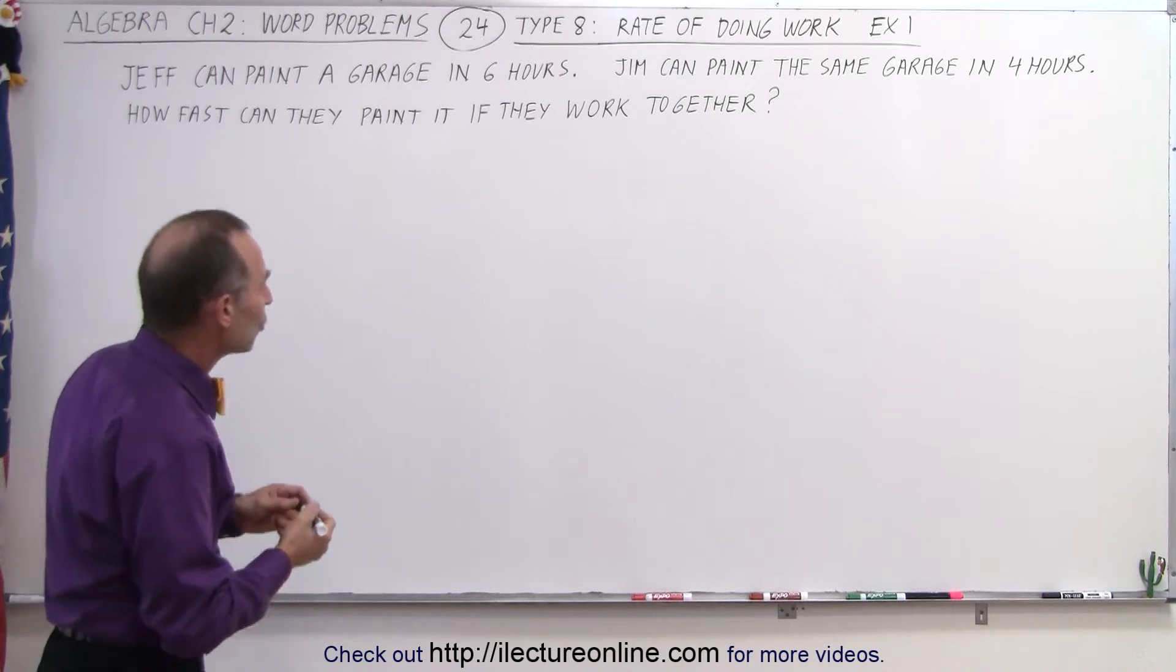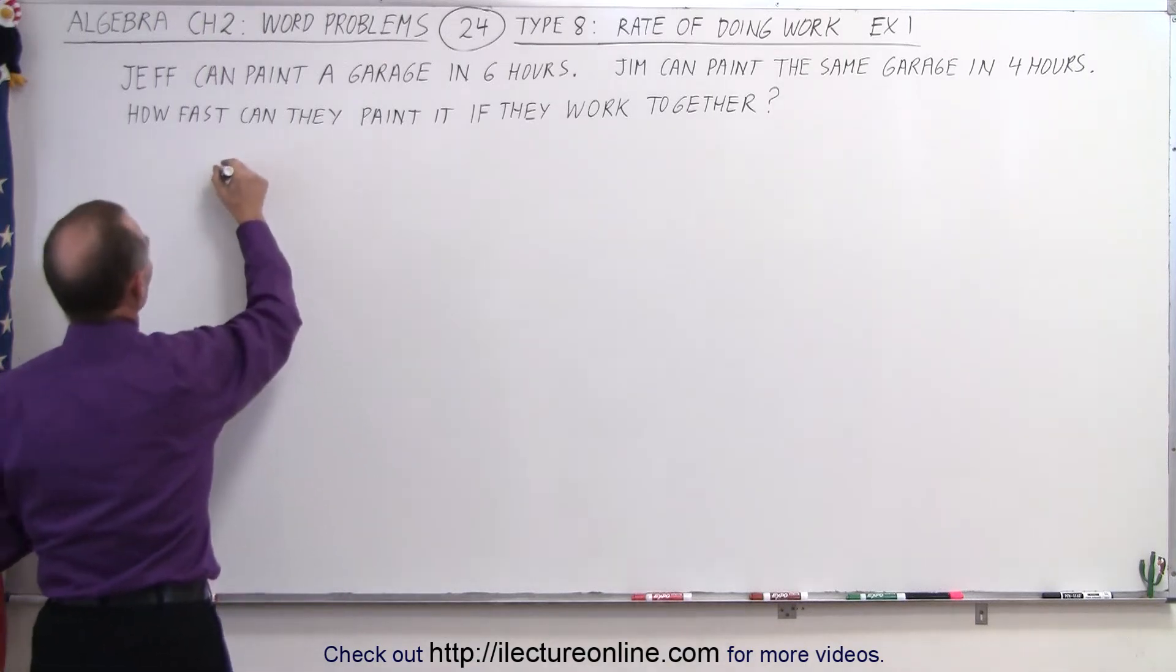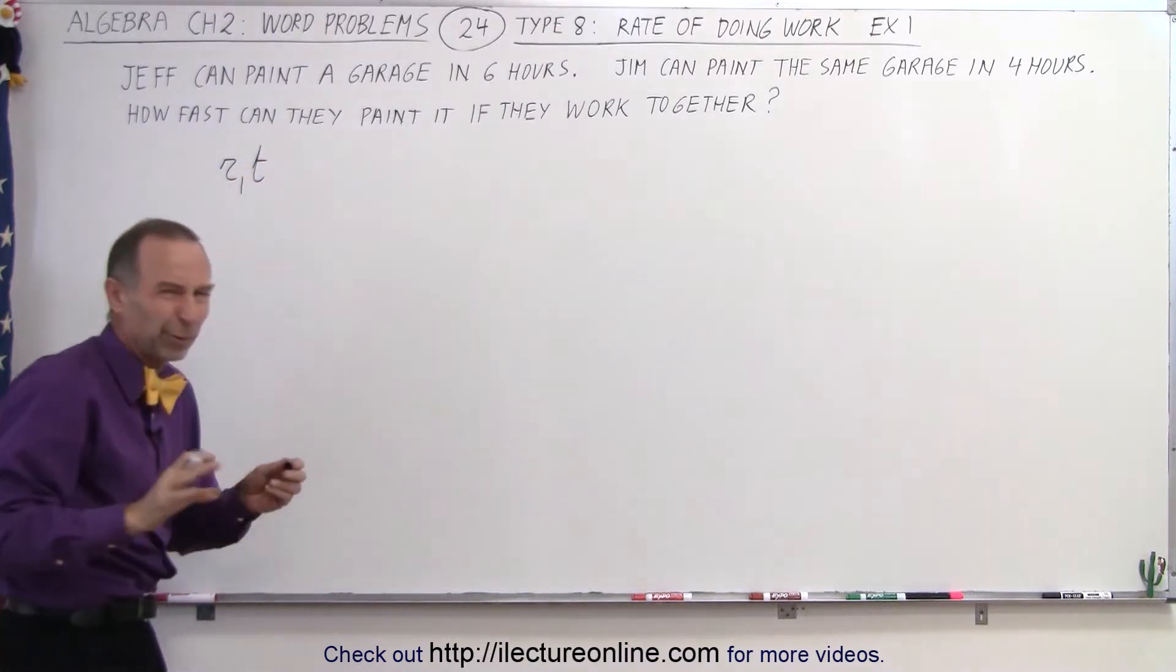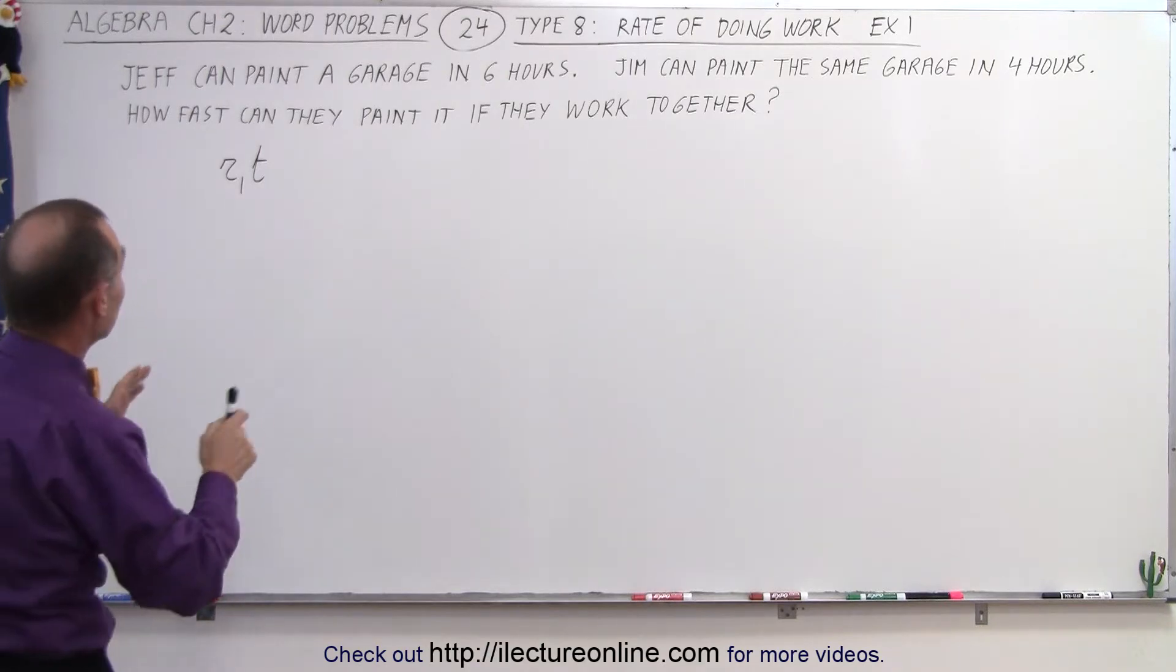And the equation you want to use to solve the problem is as follows. The rate of the first person times the time that they spent painting. And before we actually start that, let me read the problem so you know what we're trying to do here.